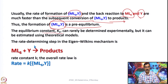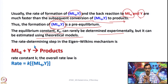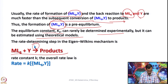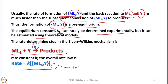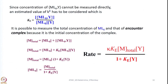The equilibrium constant Ke can rarely be determined experimentally for the encounter complex, but it can be estimated using theoretical models. The rate determining step in the Eigen-Wilkins mechanism gives the rate constant. The overall rate constant or rate law can be given as Ke times the concentration of the encounter complex. Since the concentration of the encounter complex cannot be measured directly — because the pre-equilibrium is much faster — an estimated value of Ke has to be considered, given by the ratio of encounter complex concentration to substrate concentration times the entering ligand Y concentration.